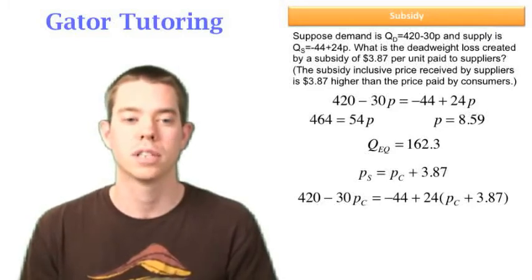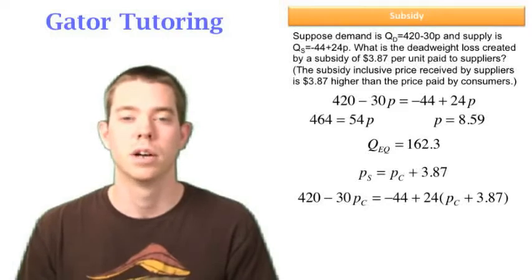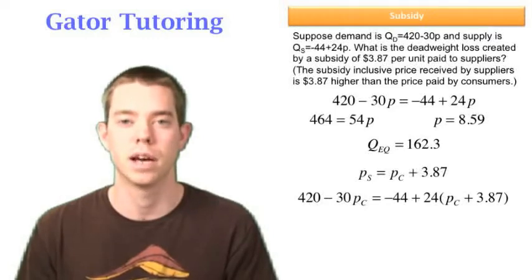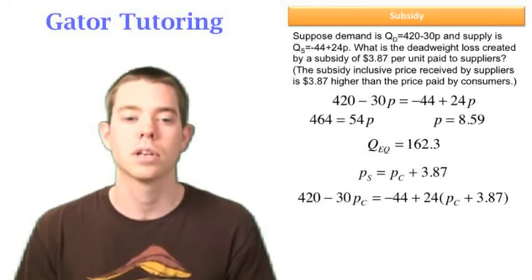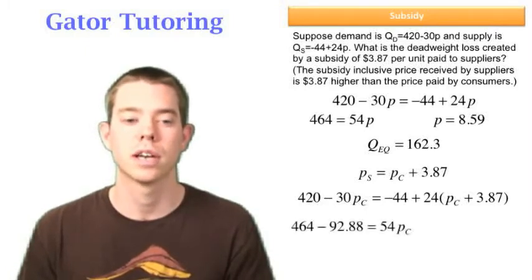So when we set supply equal to demand this time, in our supply function we're going to plug in PC plus 3.87 instead of PS. In the demand function we're going to plug in PC like usual. So now we can solve for PC after we work this out.